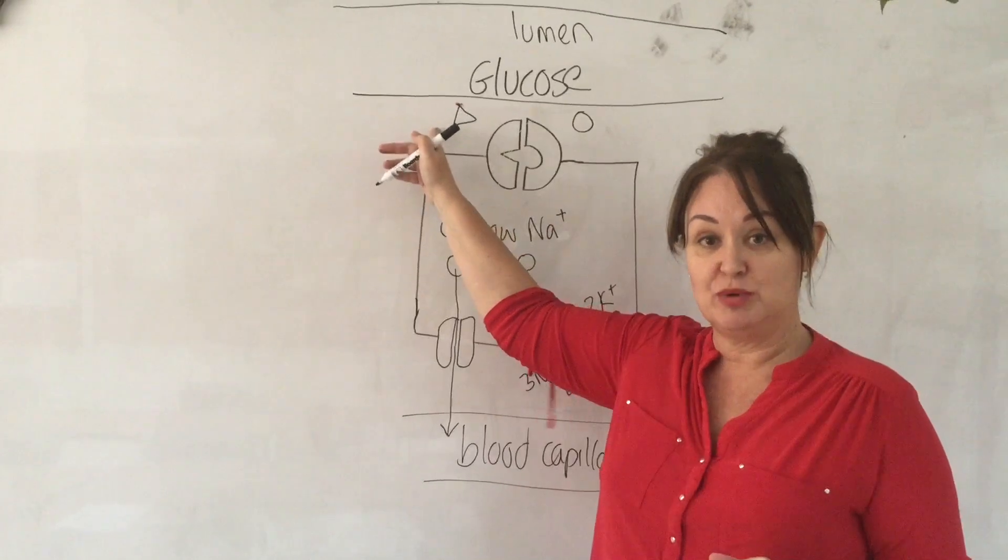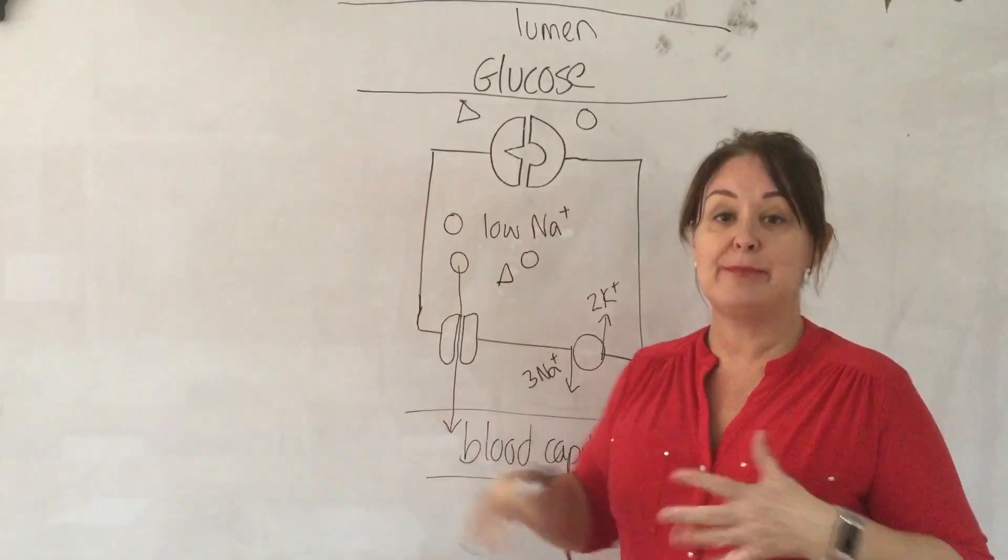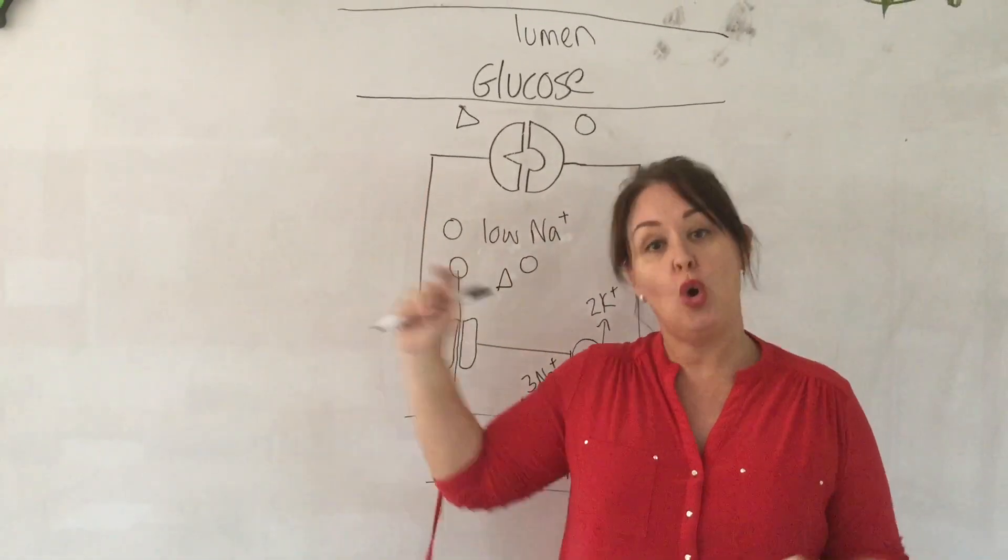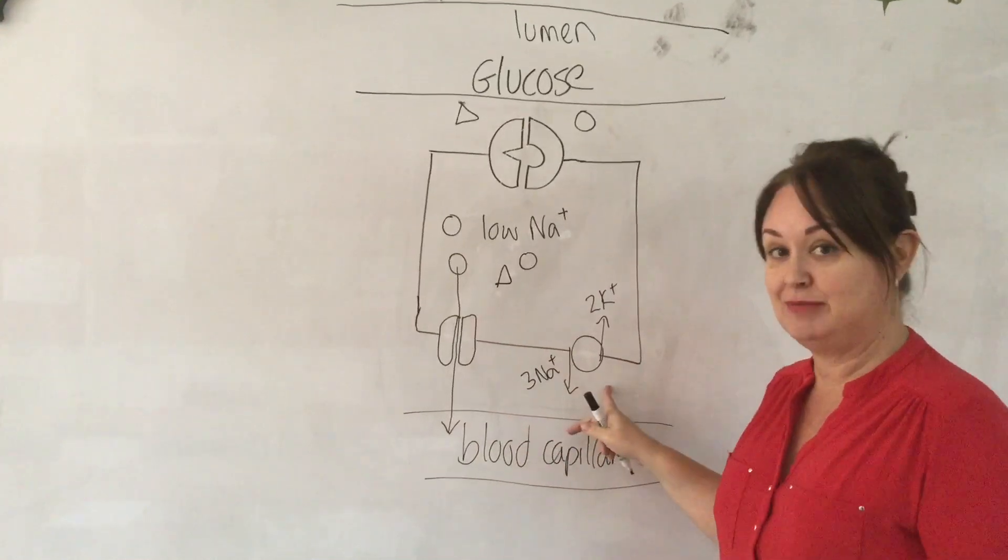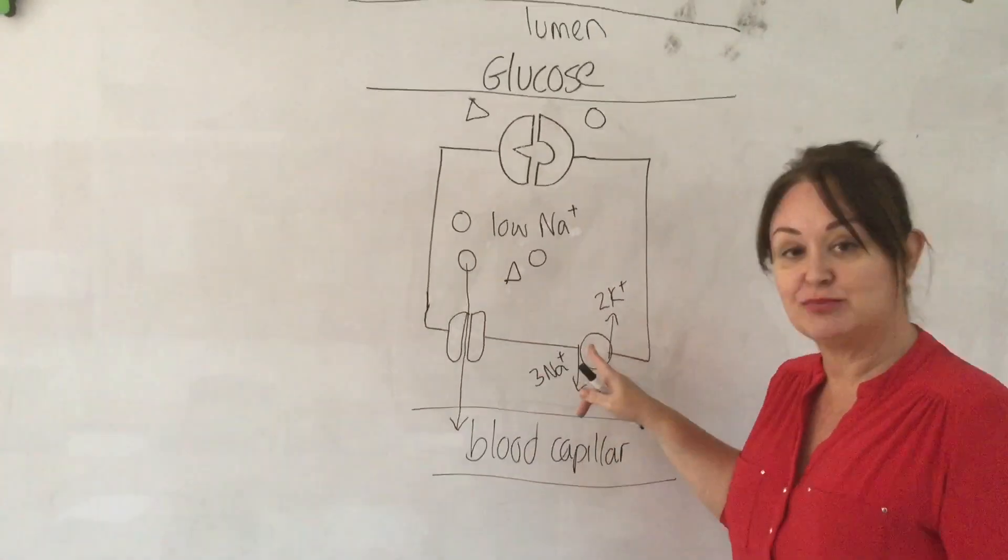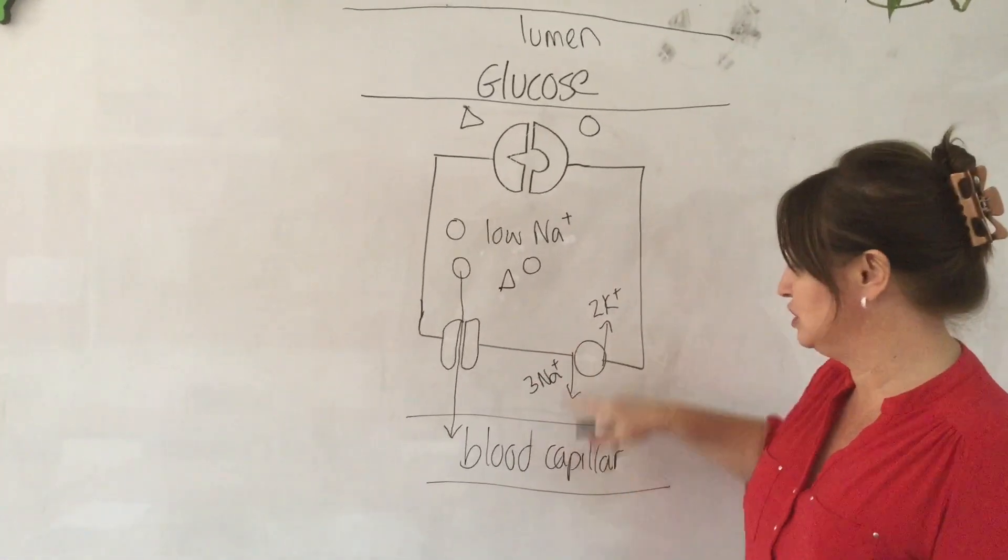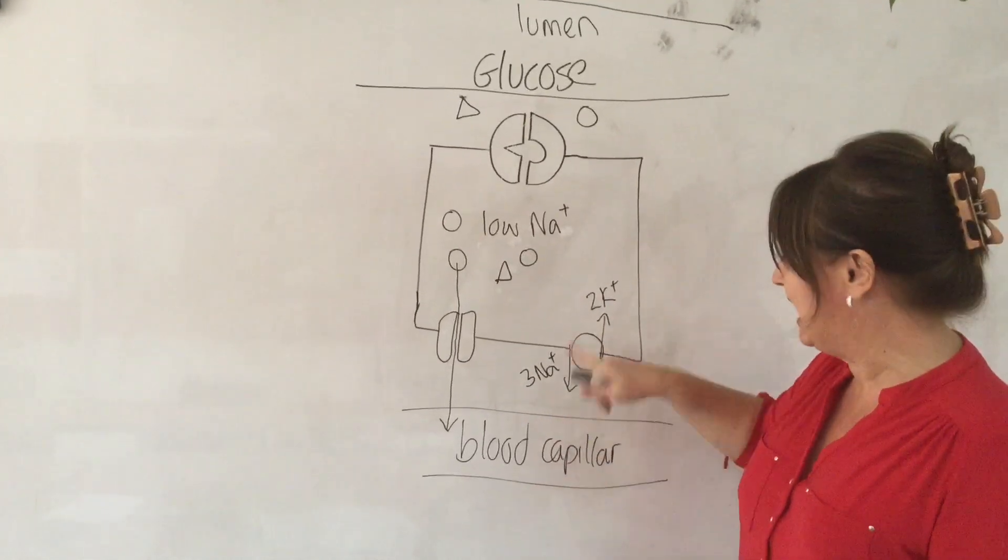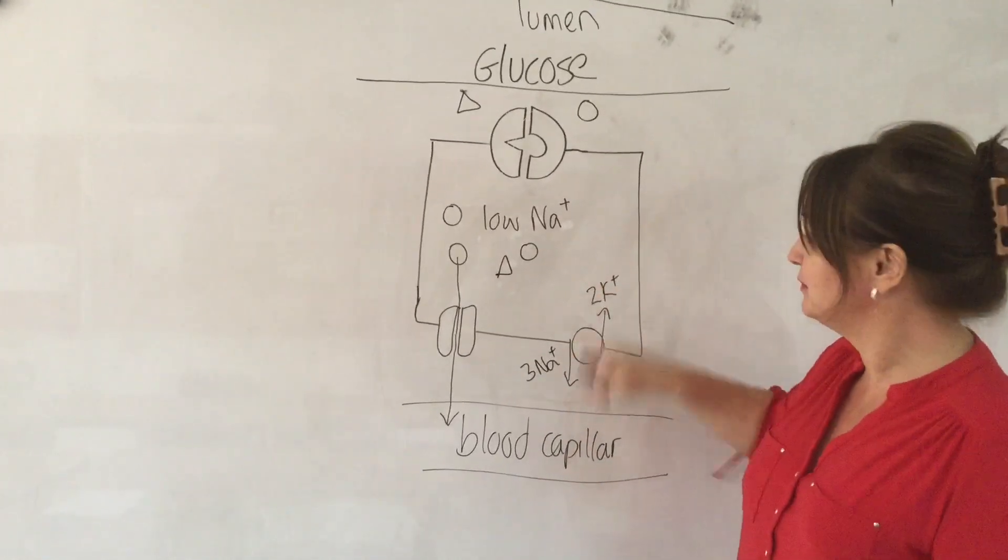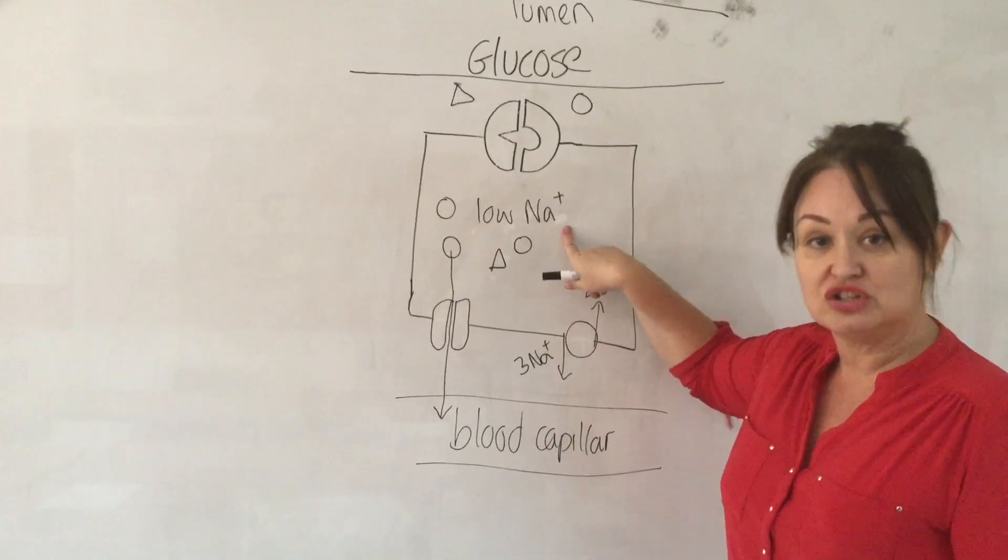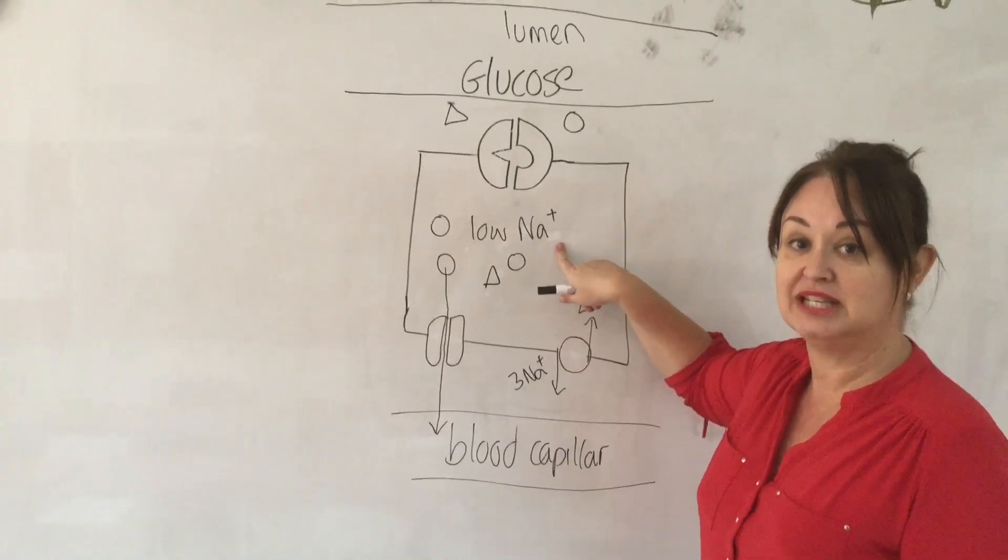We could have an active transport pump there and one there, but that's using twice as much energy. All we need is one on the basement membrane, an active transport pump. It pumps sodium out using ATP as it goes. As it does that, it lowers the concentration of sodium inside the epithelial cell.